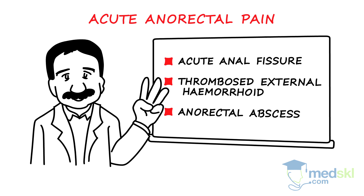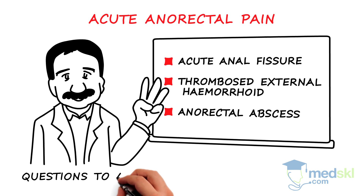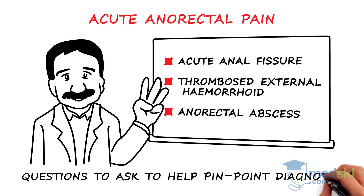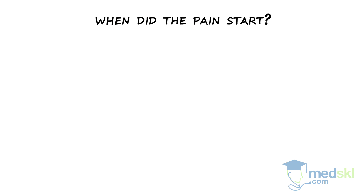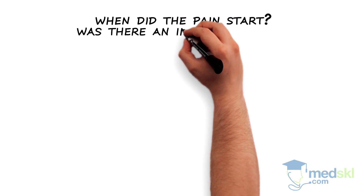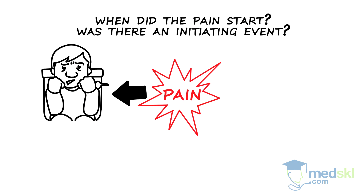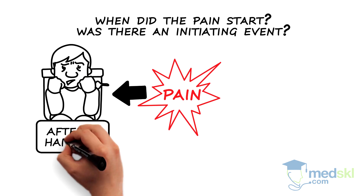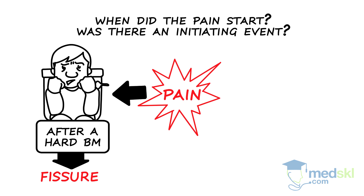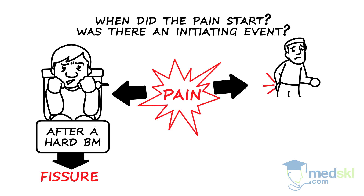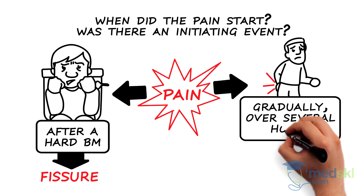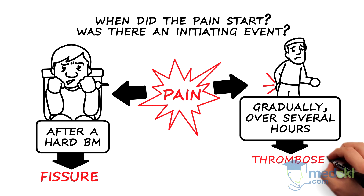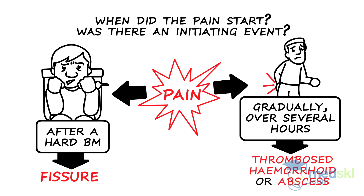When assessing a patient with acute anorectal pain, here are a few questions which I ask to help pinpoint the diagnosis. First, when did the pain start, and was there an initiating event? Pain that occurs after a hard BM suggests an acute anal fissure. Pain that started gradually over several hours suggests a thrombosed external hemorrhoid or an abscess.